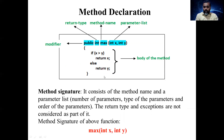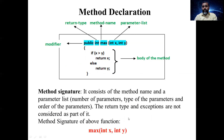The method signature consists of just the name of the function with its parameter list. For example, for the method declared above, the method signature is: max(int x, int y). This consists of the method name and the parameter list. The return type and exceptions are not considered part of the method signature.